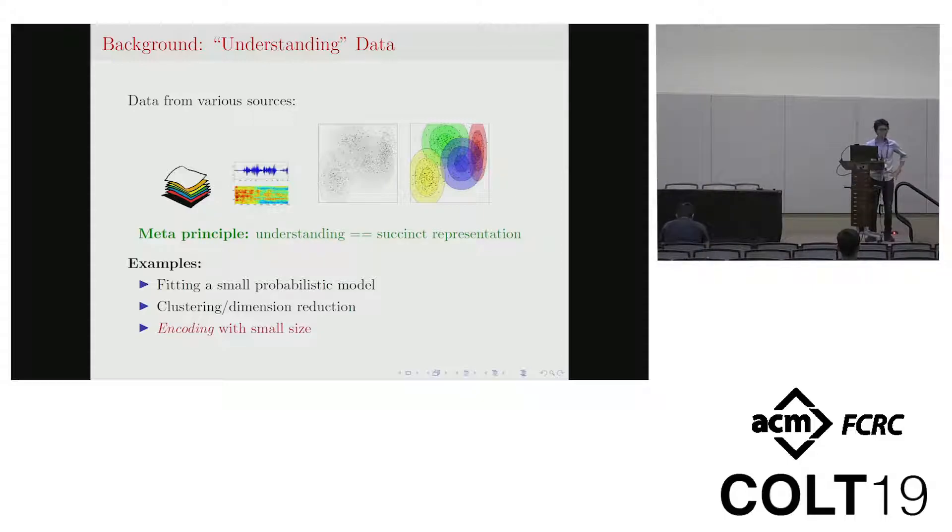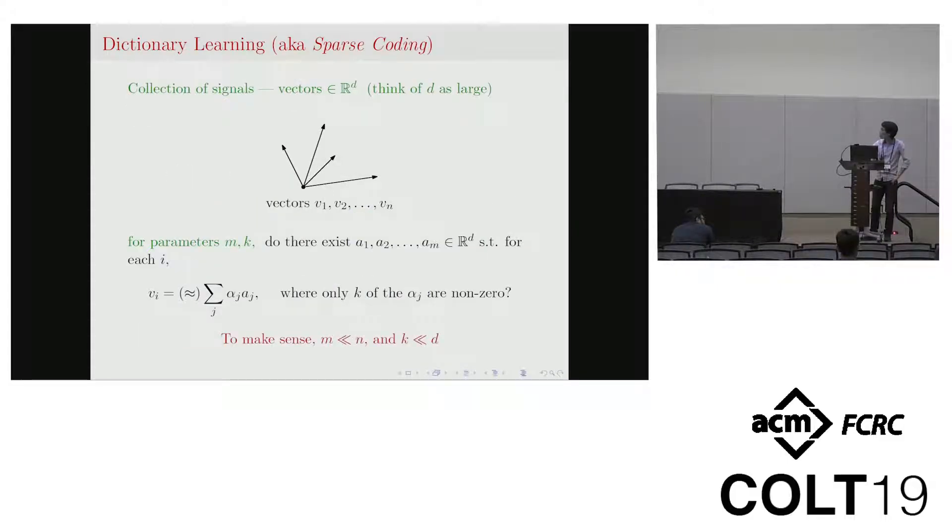Okay, here is some background. Suppose we have some data from various sources, and our high level goal here is we would like to find a succinct representation of all those data. Here is some example: we would like to find a small probabilistic model that fit our data, we would like to do clustering, we would like to do dimensionality reduction, and another example here is we would like to encode our data with smaller size, which is the one we would like to focus in this talk.